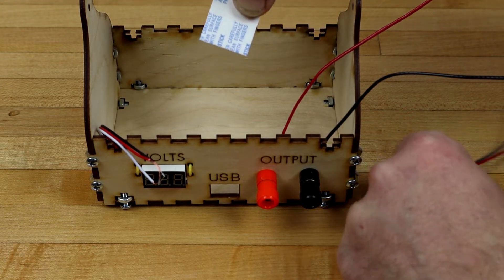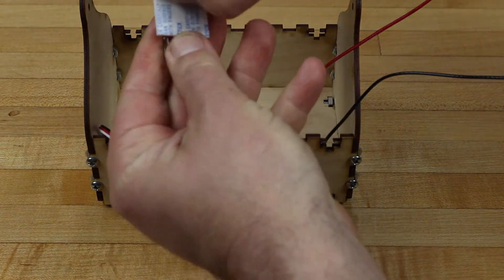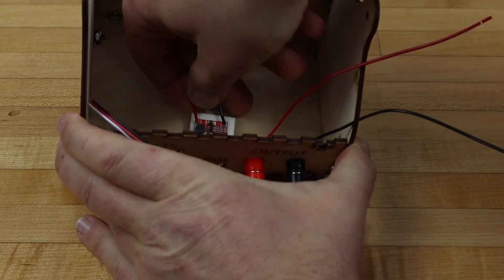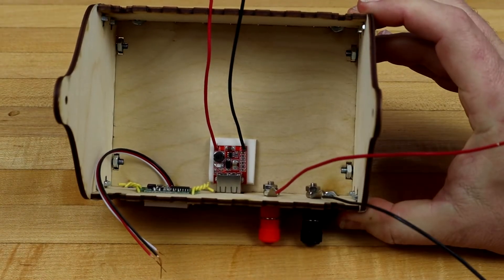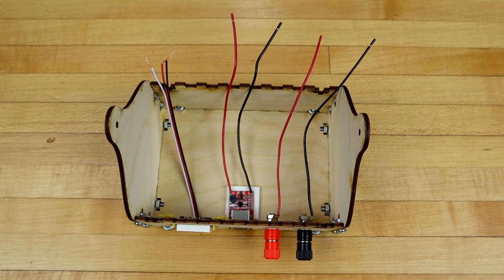Use double-sided foam tape to secure the USB circuit in place. Your science station should now look like this, with the wires hanging free.